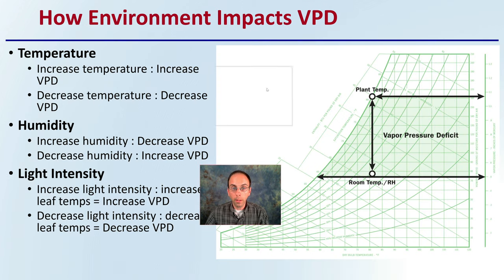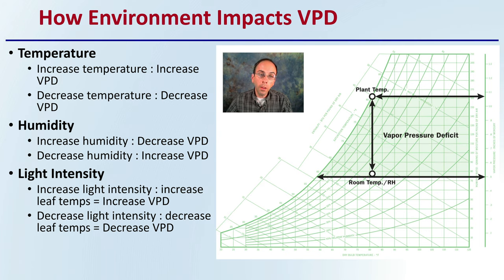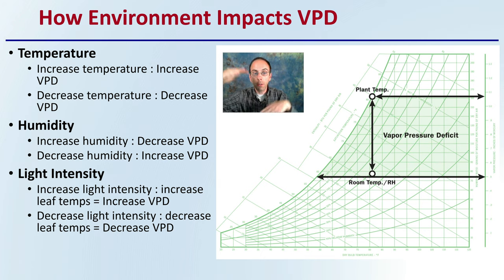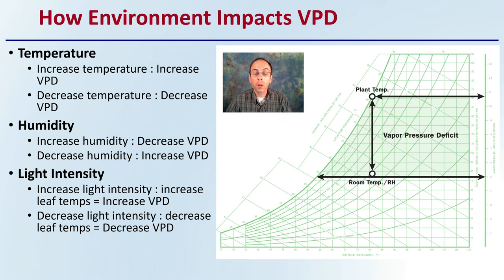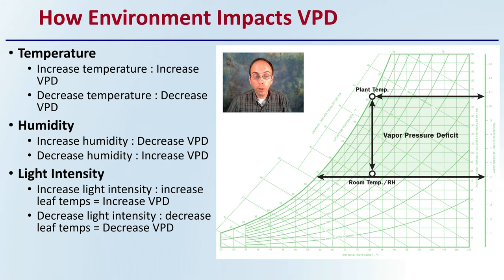How does the environment impact VPD? As you increase temperature, so does VPD — they are directly correlated. However, humidity has an inverse relationship: as you increase humidity, you decrease VPD, and as you decrease humidity, you increase VPD. As you increase light intensity, you increase the temperature of the leaf, which will also increase your VPD. Decreasing light intensity decreases leaf temps, and then decreases VPD. So those are three environmental factors that will impact VPD.